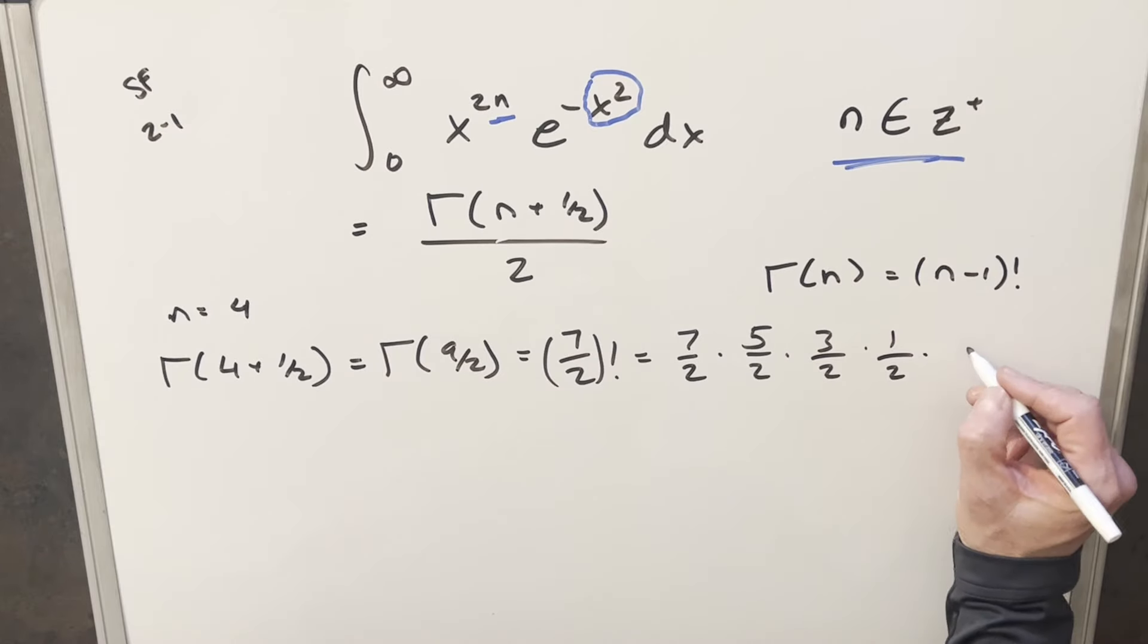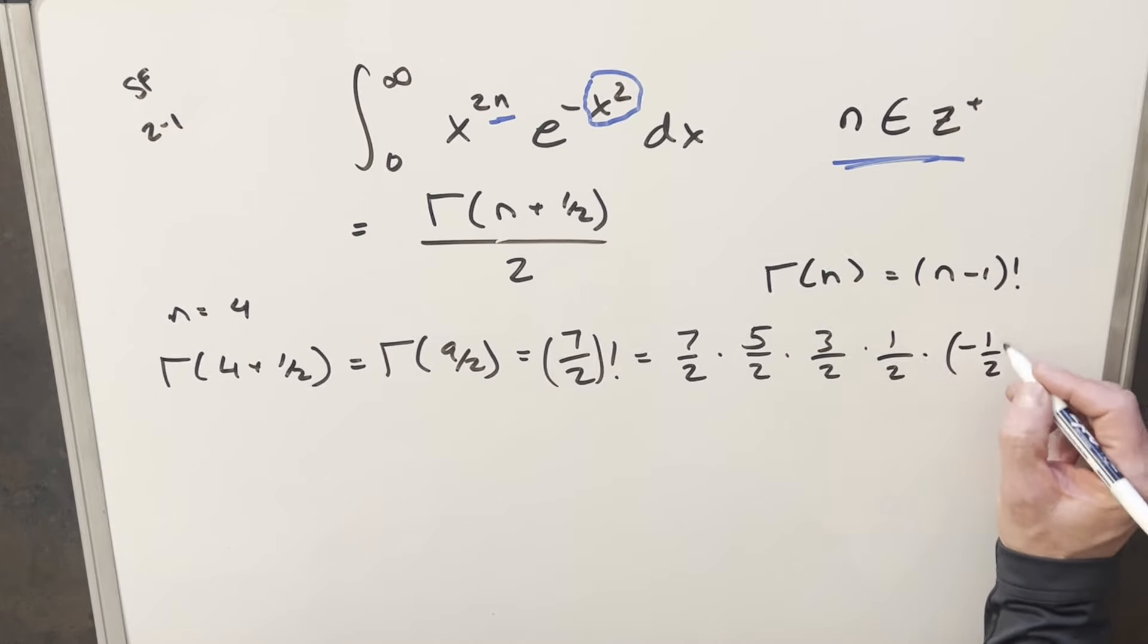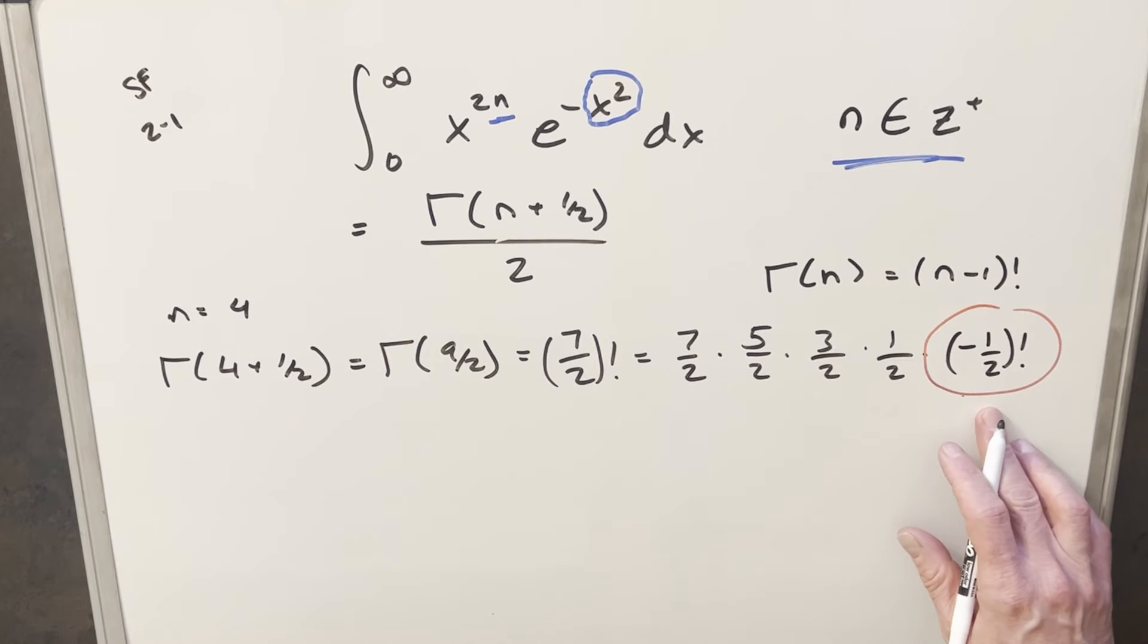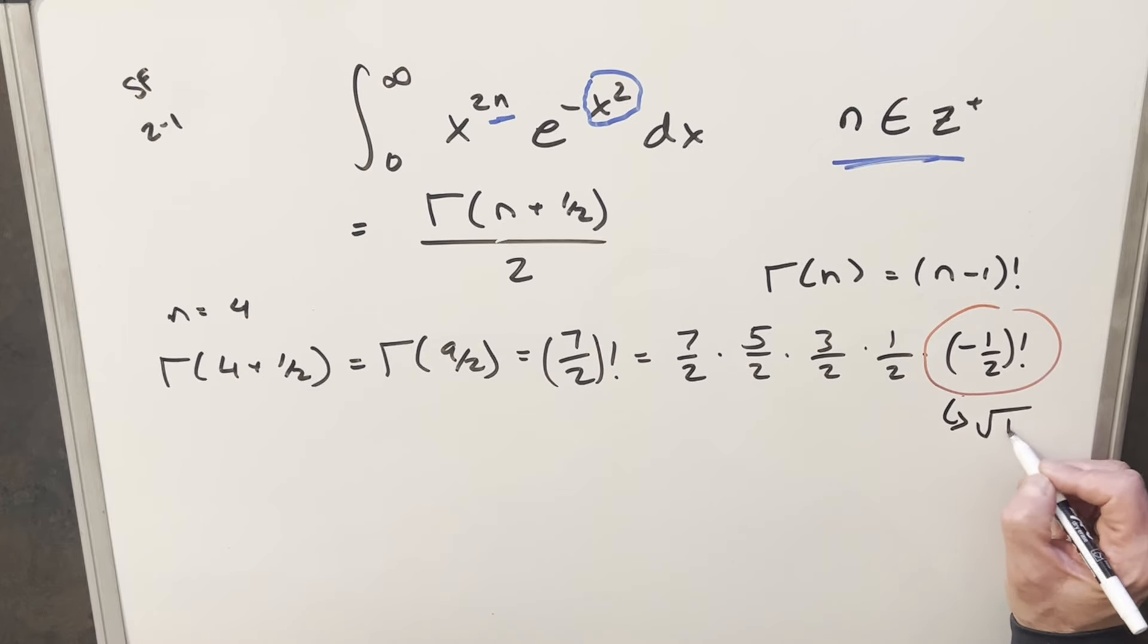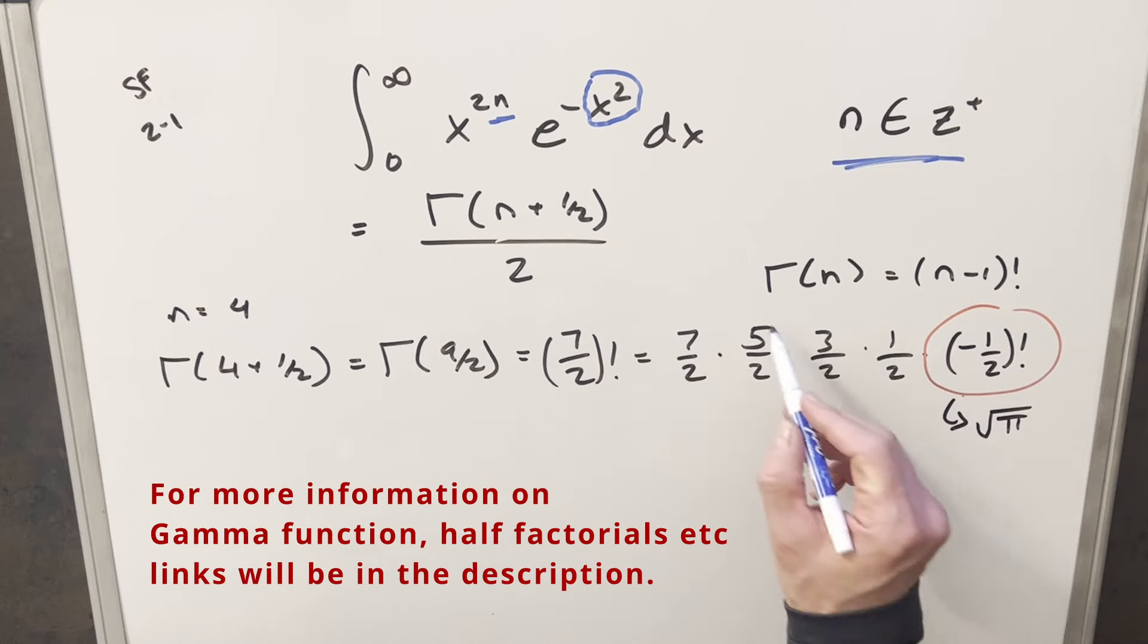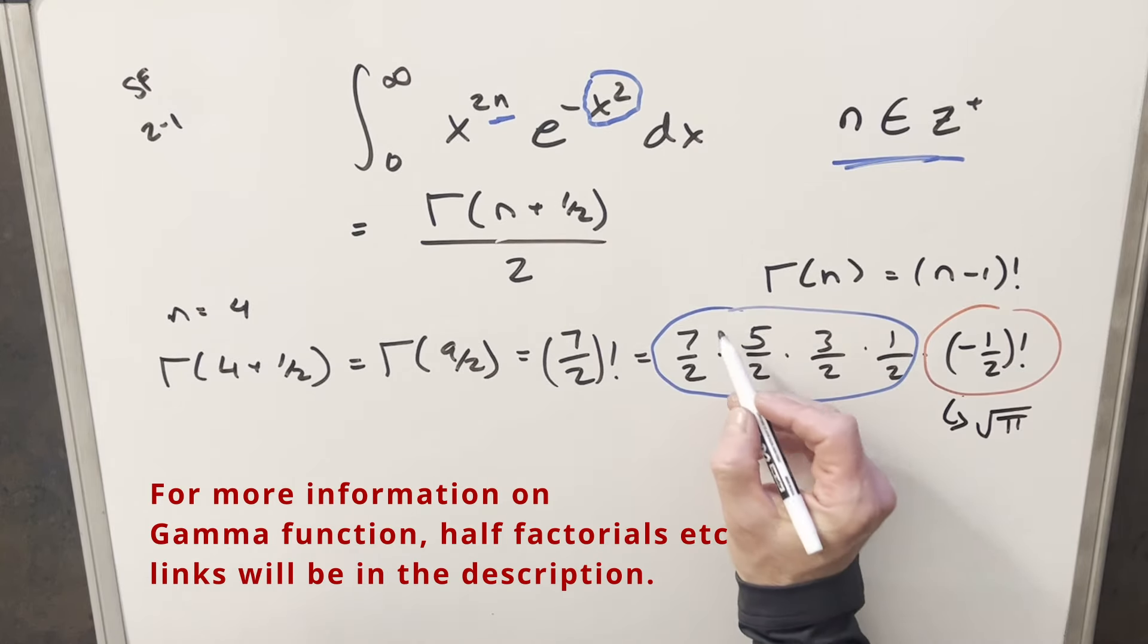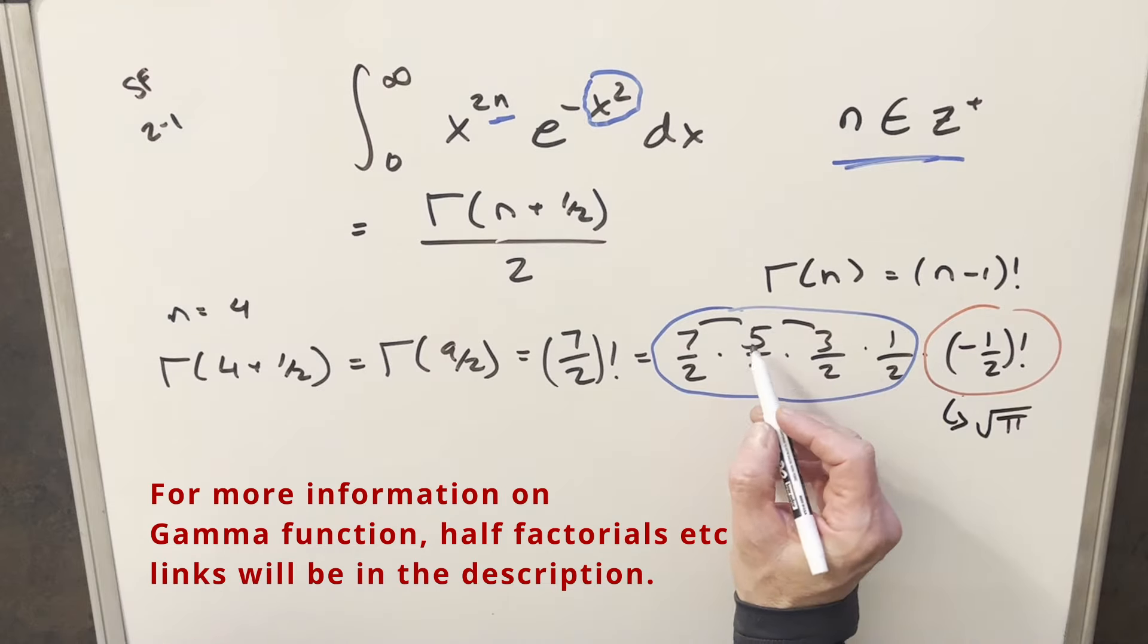And then for this last piece, I'll write it as minus 1 half factorial. Now for this value minus 1 half factorial, what I like to do is usually just memorize this one as it comes in handy so often. So the value for this is going to be actually the square root of pi. So then by just memorizing this piece, all we need to do is calculate this right here.